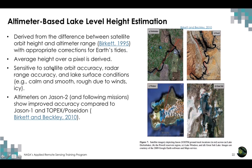Altimeter-based lake heights are derived from the difference between satellite orbit height and altimeter range. With respect to Earth's ellipsoid, this range — corrected for atmospheric and tidal contributions — gives lake height. Average height over a pixel is derived, giving just one number per pixel. It is sensitive to satellite orbit accuracy and lake surface conditions. If the surface is rough due to winds, ice, or precipitation, that affects the accuracy of the height derived from the range.